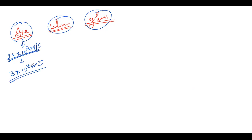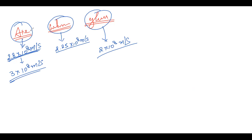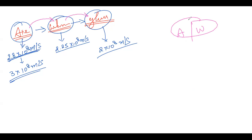To summarize the speeds: in vacuum we take 3 × 10⁸ m/s, in water approximately 2.25 × 10⁸ m/s, and in glass approximately 2 × 10⁸ m/s. This shows that these media have different optical densities. As the speed is decreasing, you can say that the optical density is increasing.